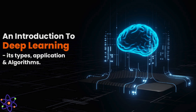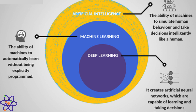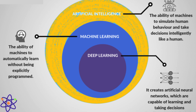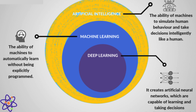Deep learning is a subfield of machine learning that focuses on algorithms inspired by the structure and function of the human brain, known as artificial neural networks. The term 'deep' refers to the use of multiple layers in these neural networks. Deep learning algorithms aim to automatically learn hierarchical representations of data through the composition of various transformations, allowing them to discern intricate patterns and features in large datasets.